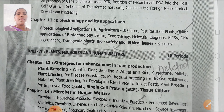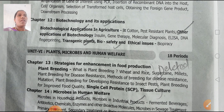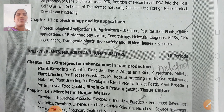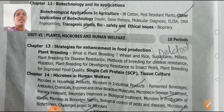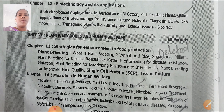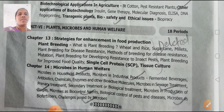Unit 6 is Plants, Microbes and Human Welfare. This is the last and 6th unit. Chapter 13, Strategies for Enhancement in Food Production, is deleted. Chapter 14, Microbes in Human Welfare, includes: household products, industrial products, sewage treatment, production of biogas, biocontrol agents, bio fertilizers, and challenges posed by microbes.